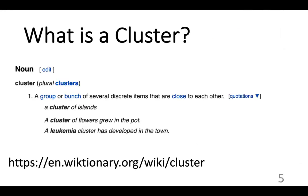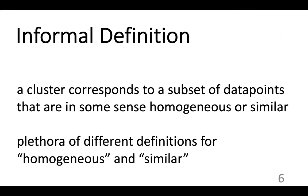In clustering methods, we would like to find clusters. If you look up Wikipedia you get different definitions for the term cluster. In this course we use a very precise definition based on an informal one: a cluster corresponds to a subset of data points that are in some sense homogeneous or similar to each other. This is only informal because we need to make precise what we mean by homogeneous and similar. Different definitions of homogeneity end up in different clustering methods.